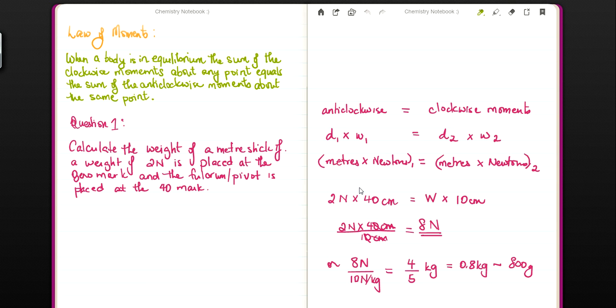Question 1. Calculate the weight of a meter stick if a weight of 2 newtons is placed at the 0 mark and the fulcrum or pivot is placed at the 40 mark. Now the trick of this question is not to tell you how long the stick is. You're supposed to gather that the stick is actually 100 centimeters long because it's a meter stick.